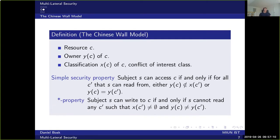The model can be defined in terms similar to Bell-LaPadula. For a resource c, the owner is denoted y(c) and the classification is x(c), where the classification is a conflict-of-interest class. The simple security property states that a subject s can access c if and only if for every c-prime that s can read, either the owner of c is not in the conflict-of-interest class of c-prime, or the owner of c and c-prime is the same — meaning there is no conflict of interest, so s can access both.